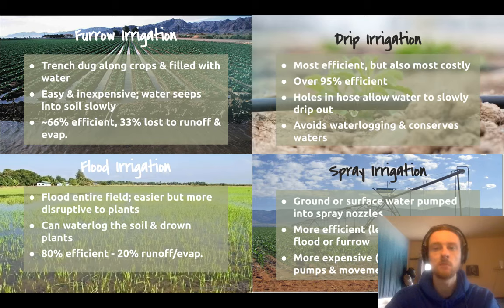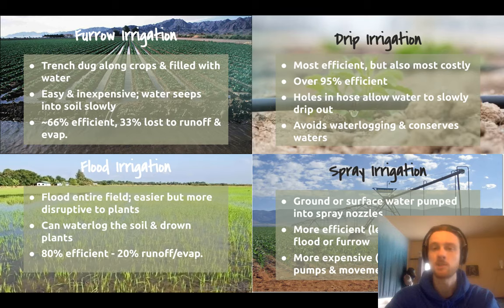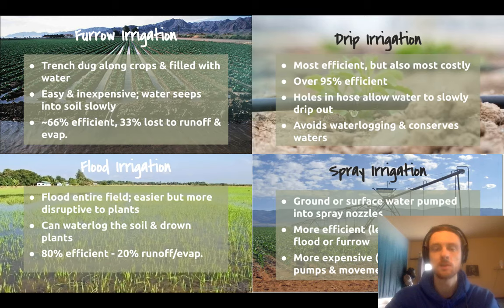Finally, we have drip irrigation, which is the most efficient by far — over 95% efficient. It's going to conserve water, prevent water logging, and prevent soil salinization, which we'll talk about shortly. The problem is that it's very expensive and not practical for some crops. You're not going to run miles and miles of hose material out over cornfields or wheat fields usually. Drip irrigation is more limited to vegetables generally, or crops grown in smaller amounts of land.